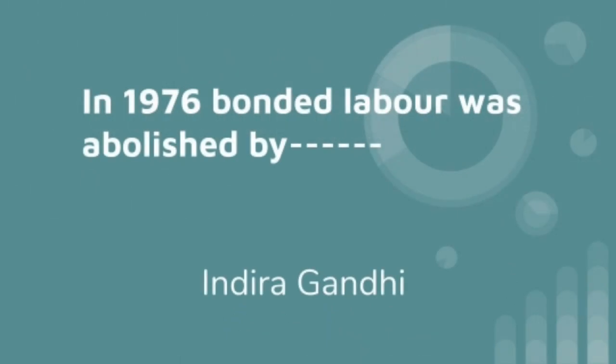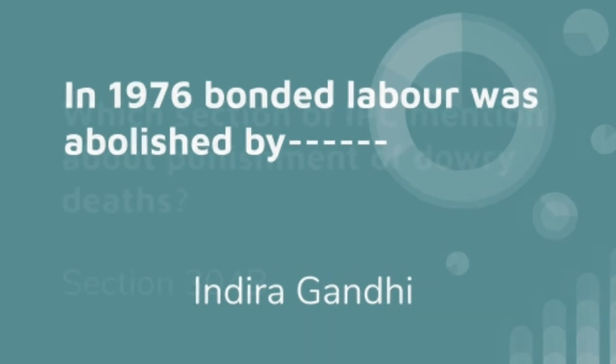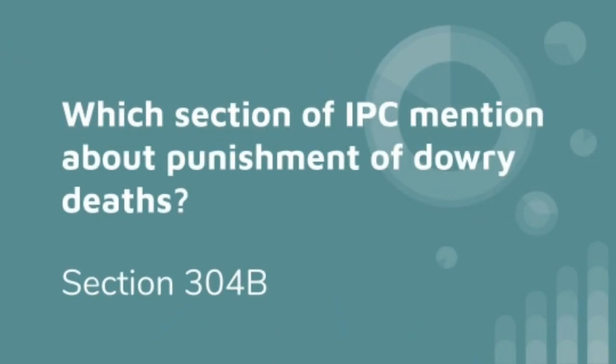In 1976, Indira Gandhi abolished the system of bonded labor. Which section of IPC mentions punishment for dowry deaths? Section 304B of IPC discusses the punishment of dowry death.